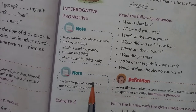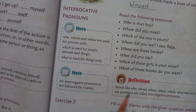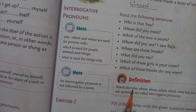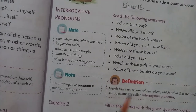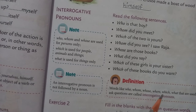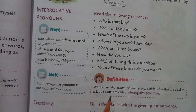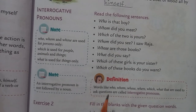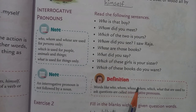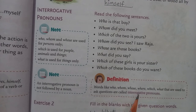An interrogative pronoun is not followed by a noun. See the definition. Words like who, whom, whose, where, which, what that are used to ask questions — these words are always used to ask questions — are called interrogative pronouns.